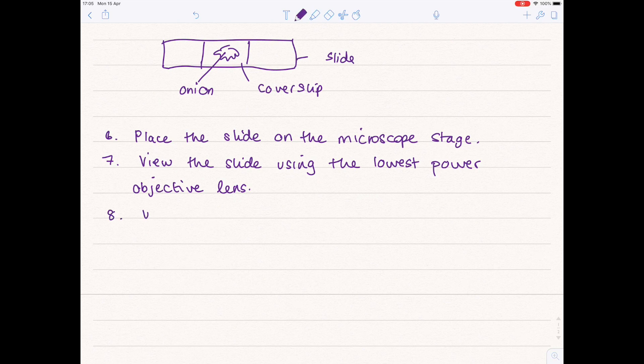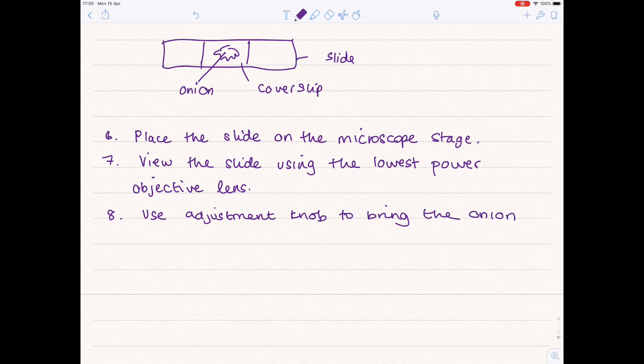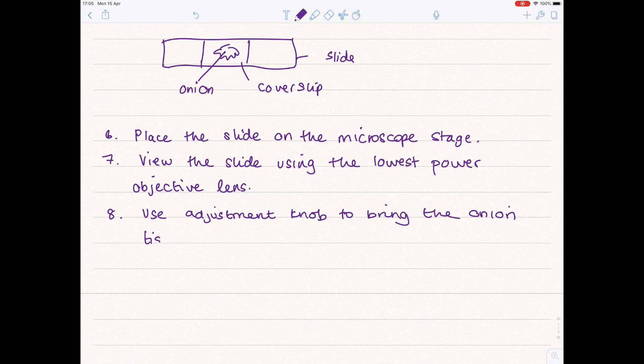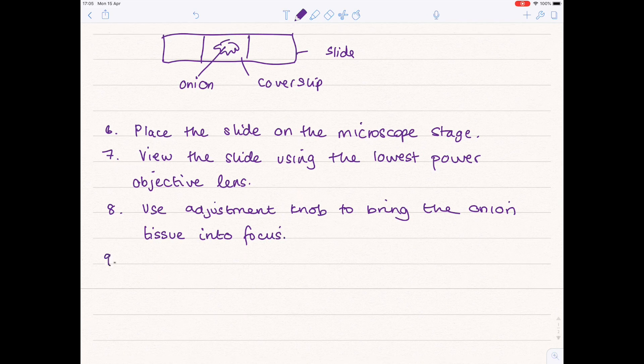Step eight: use adjustment knob to bring the onion tissue into focus, and then magnify tissue using higher power objective lens.